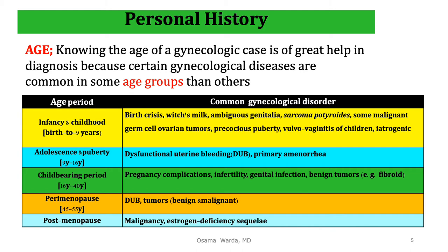In early childhood, some tumors such as sarcoma botryoides, malignant germ cell tumors, and ovarian tumors are seen, along with precocious puberty, vulvovaginitis in children, and iatrogenic causes such as foreign bodies in the vagina.